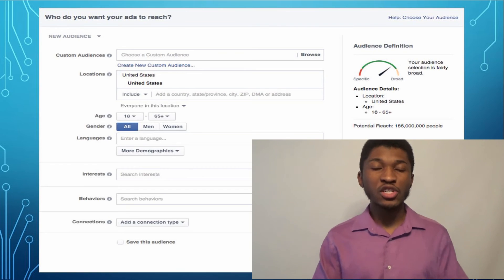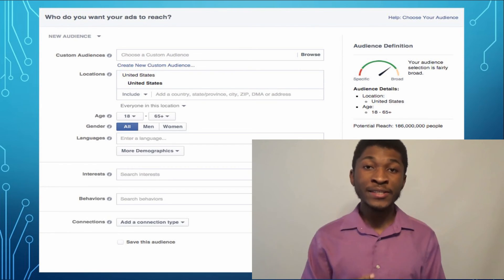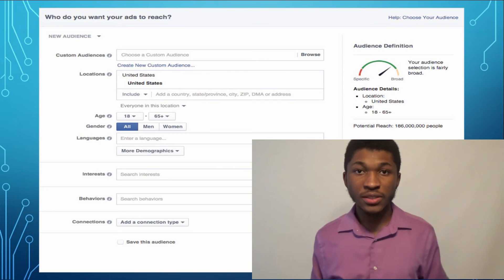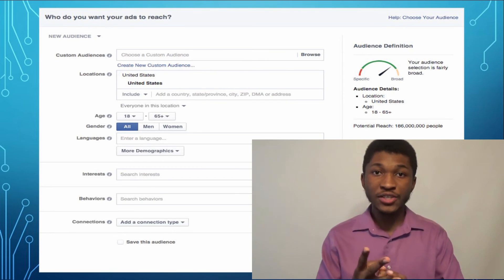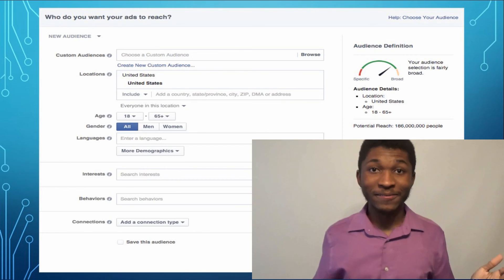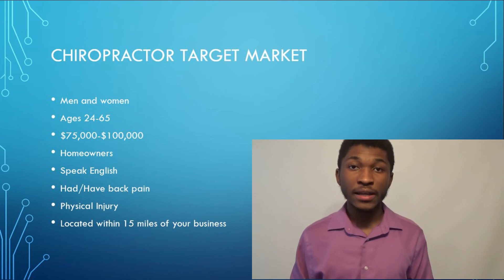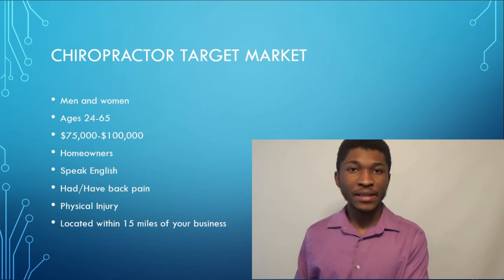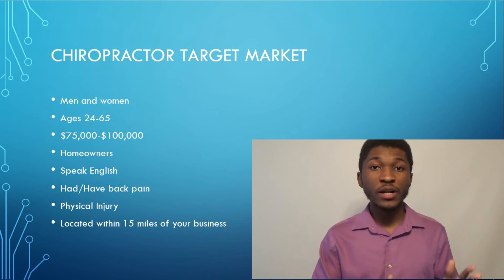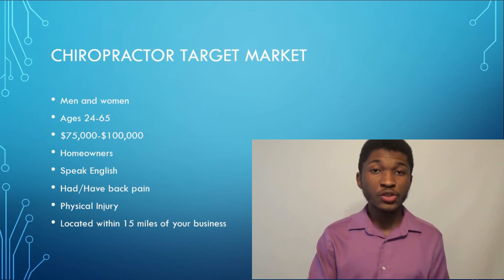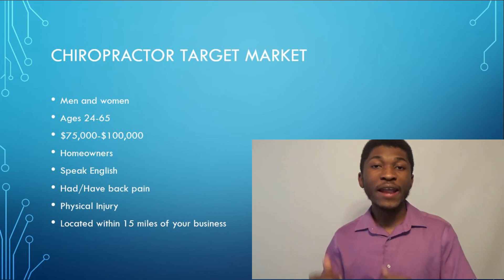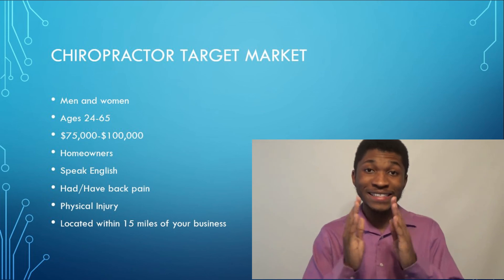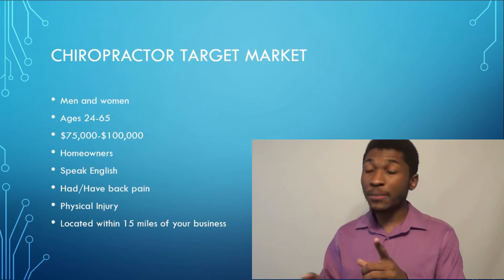Once you click the option you want, the next page is one of the most important parts of the entire process — this is where we target the specific people who need a chiropractor. Facebook ads get crazy results because you can target someone based on their age, gender, location, interests, income, hobbies, everything. After two years of learning about chiropractic businesses, the specific target market is men and women ages 24 to 65, with an income of $75,000 to $100,000, because we want to attract people who both need and can afford a chiropractor. Also: homeowners who speak English, someone who has had back pain, a physical injury in their past, and who lives within a 15-mile radius of your business.